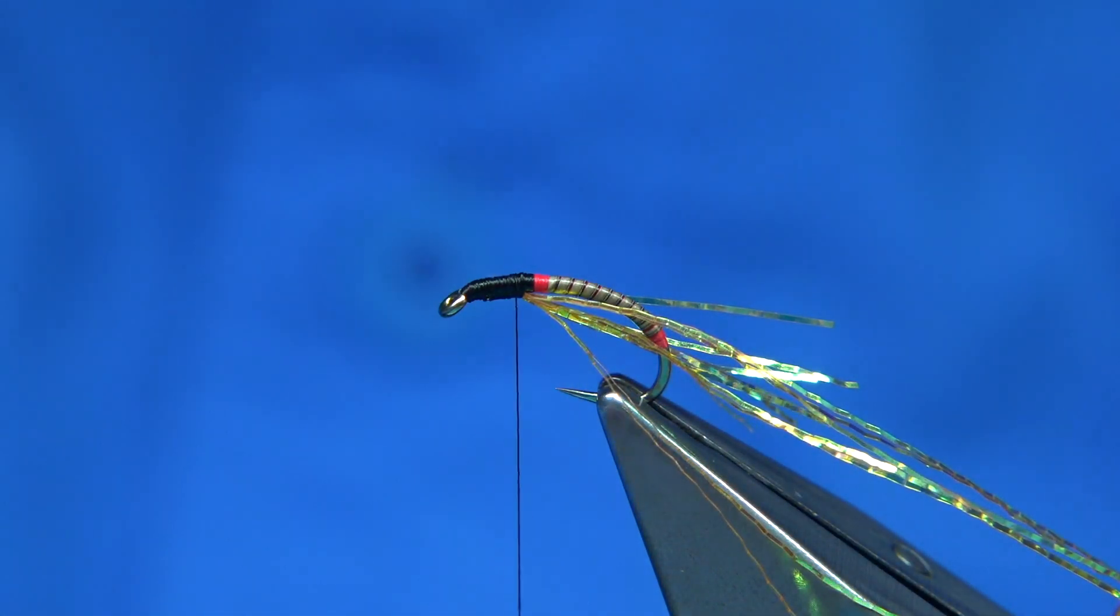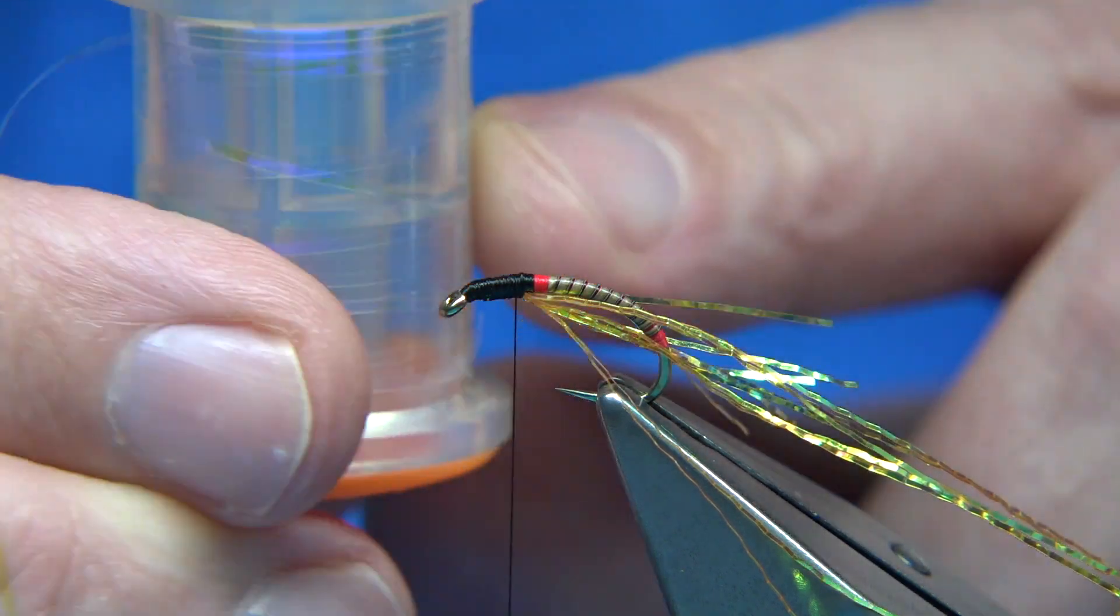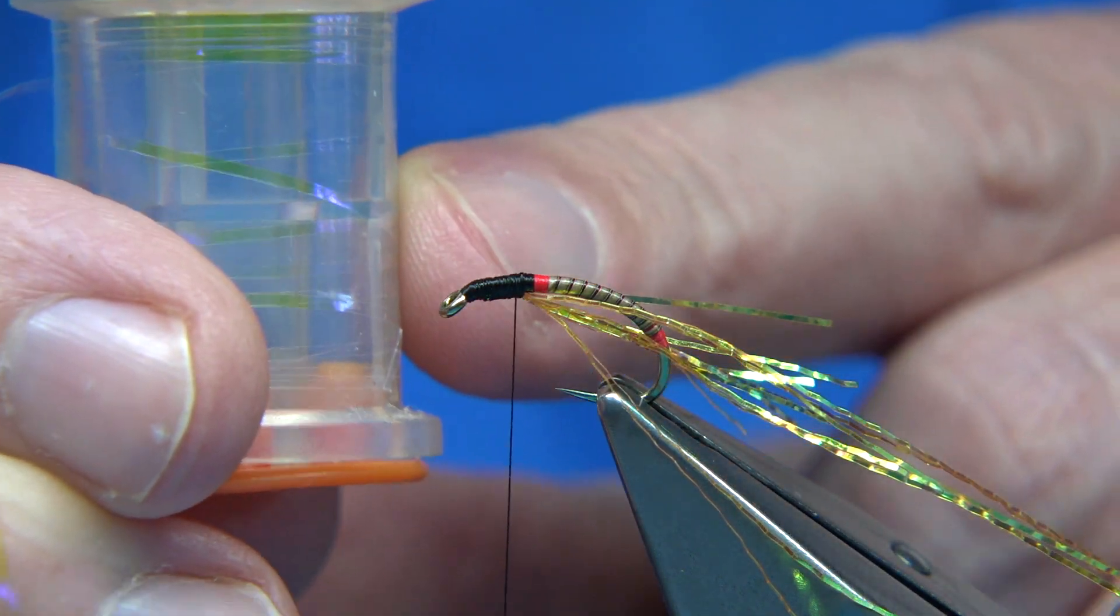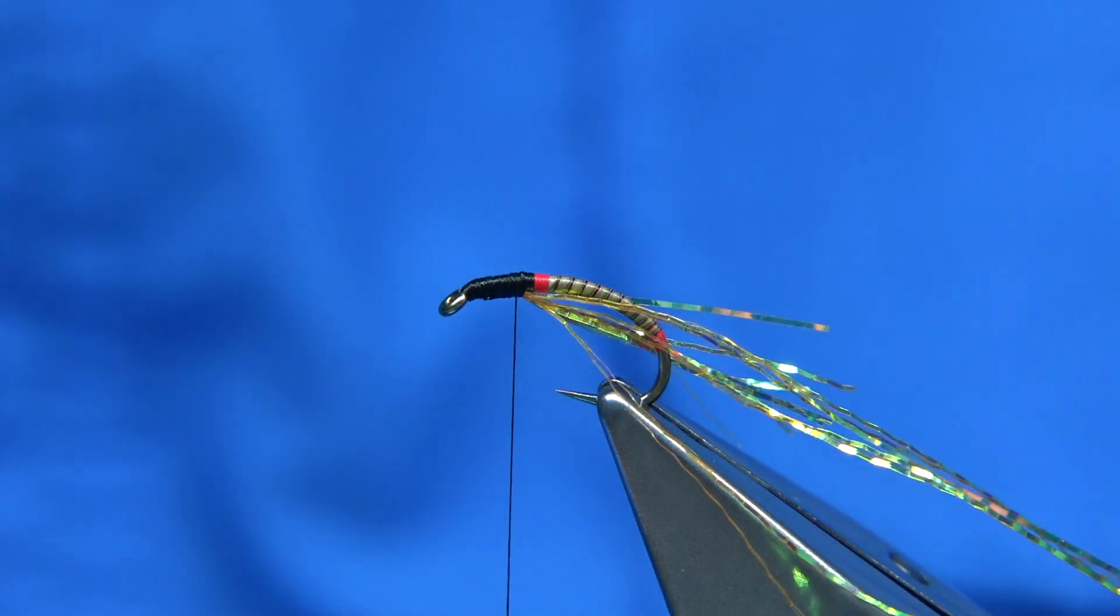Now I've got a UV, this is UV Perro, ice blue. It catches the light really well. And you can use that as a thorax cover.